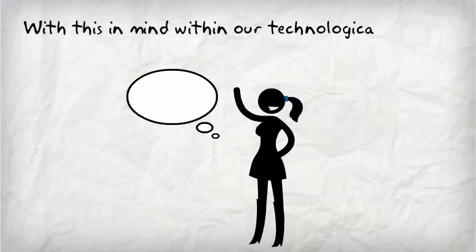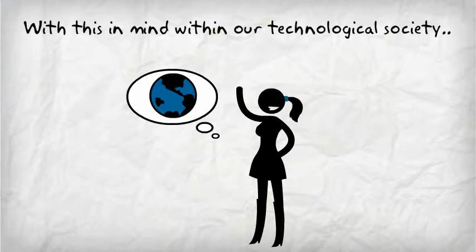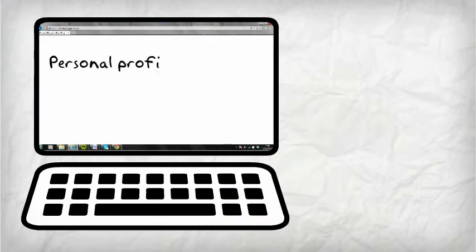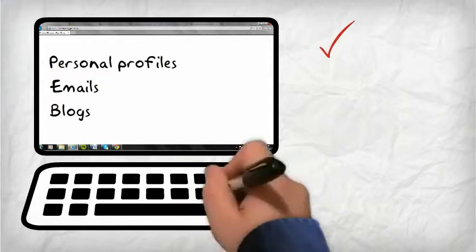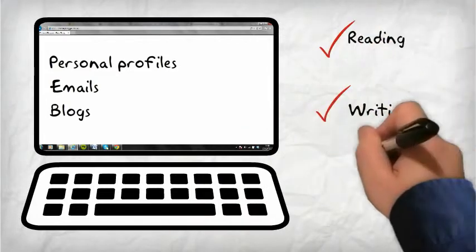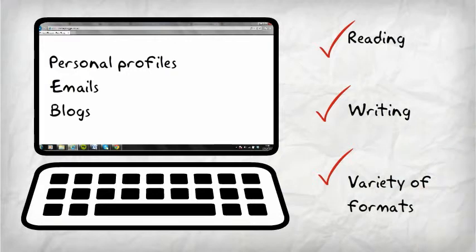With this in mind, within our technological society, children now have the opportunity to widen their understanding of the world and become more cultured human beings by sharing and conversing with a wider range of people. Through personal profiles, emails, and blogs, children can share information with people all over the world with similar interests, which can promote reading and writing skills as well as giving children the opportunity to publish information in a variety of formats.